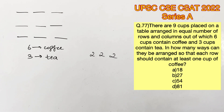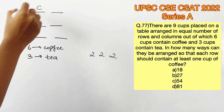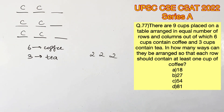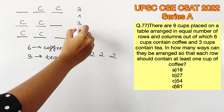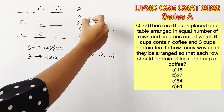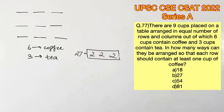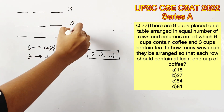Let's consider the case where the coffees are distributed equally among the three rows — two in each row. Consider the first row: the two coffees can be arranged in three different ways. Likewise, there are three possibilities for the second row and three for the third row. Multiplying all these gives 27 possible arrangements for the equal distribution case.